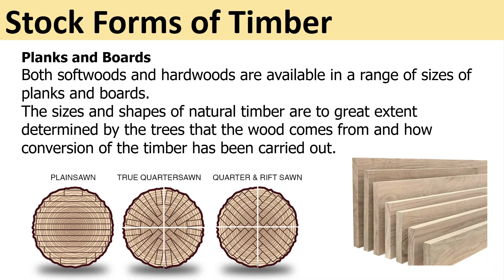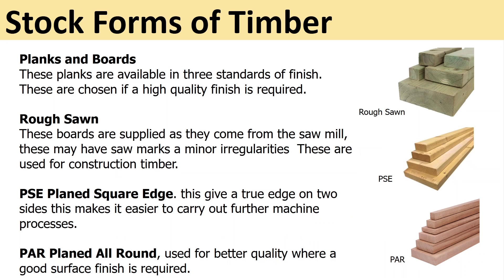Stock forms of timber: planks and boards. Both softwoods and hardwoods are available in a range of sizes of planks and boards. The sizes and shapes of natural timber are to a great extent determined by the trees that the wood comes from — you're limited by the size of the tree and how the conversion of timber has been carried out. You can see here the different types of how wood can be sawn from a tree, basically from the trunk.